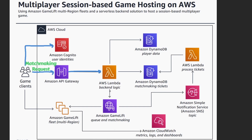The first thing that this Lambda function is going to do with its backend logic is figure out what the skill is of this particular player. A lot of gaming applications use something like ELO to manage or determine skill. In order to retrieve that data, we're going to query this DynamoDB table which stores the player data — the skill ELO, keyed off of something like user ID. So now in hand in this Lambda function, we have something like user ID one and an ELO of maybe 1500 or something like that. With the ping of the user to the wide variety of AWS regions and the skill of the user, it is now ready to submit a request to our matchmaking service.